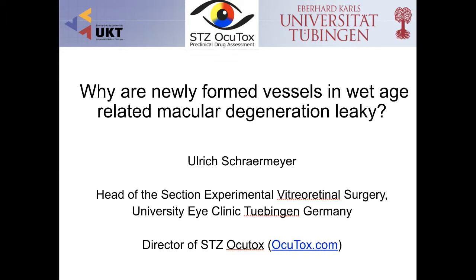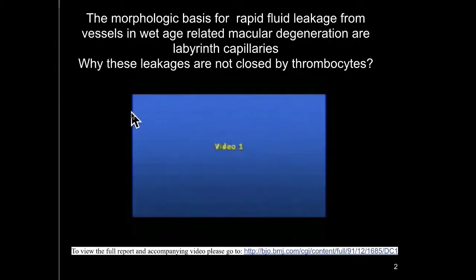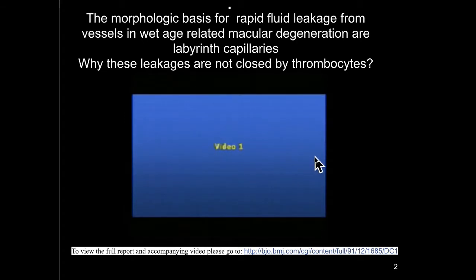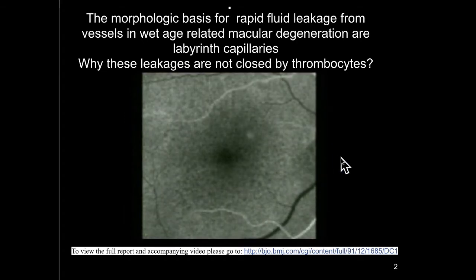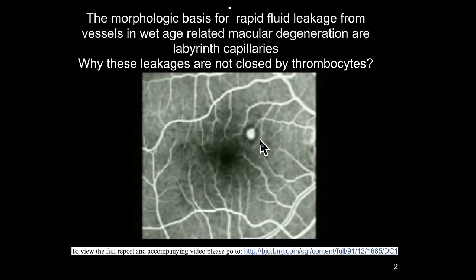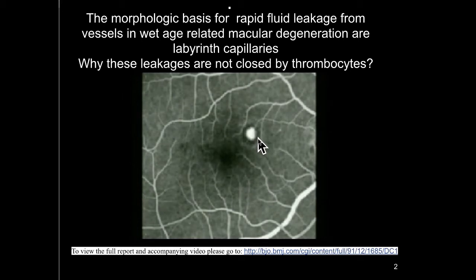Why are newly formed vessels in wet age-related macular degeneration leaking? If we perform an angiography of a newly formed neovascular membrane, as you can see here, we will see that very often we have large leakages in which the fluid can exude into the sub-retinal space.